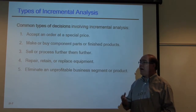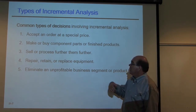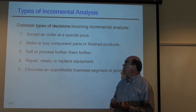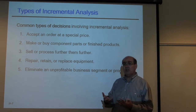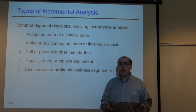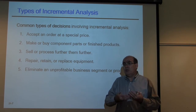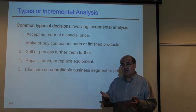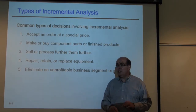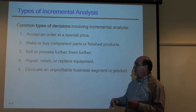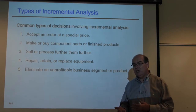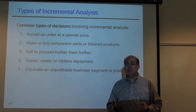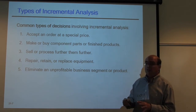There are five different categories we'll look at: first, a special price order where you can make more product but sell it at a lower price — should you do it? Second, should you make products in-house or outsource and buy from somebody else? Third, should you sell a product at an interim stage or refine it further and sell at a higher price? Fourth, should you repair, retain, or replace equipment? And fifth, if you have an unprofitable business segment, should you keep it or close it?